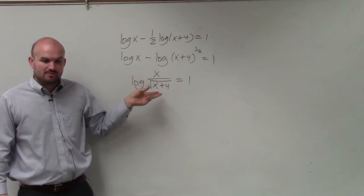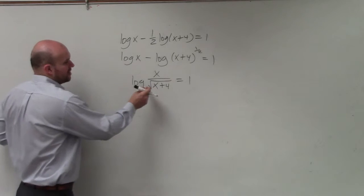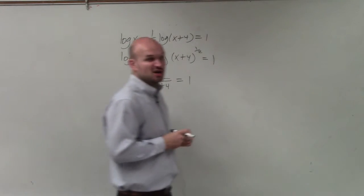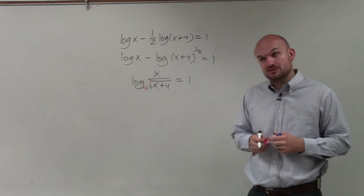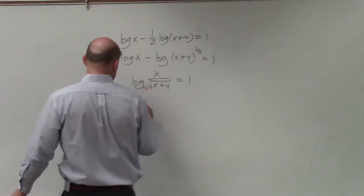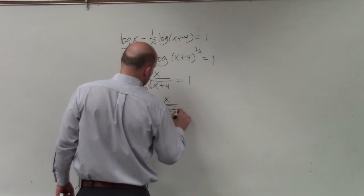Subtracting, you write division. Now remember, if we don't have a base and it's a regular logarithm, then we know it's base 10. So if I wanted to solve this, I can't use the one-to-one property, but I can convert this to exponential form. So I can rewrite this as 10 to the first power equals x over the square root of x plus 4.